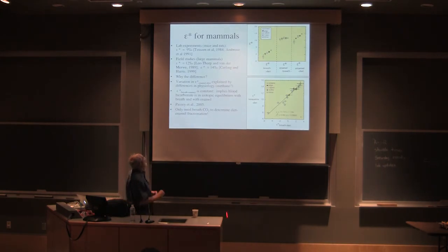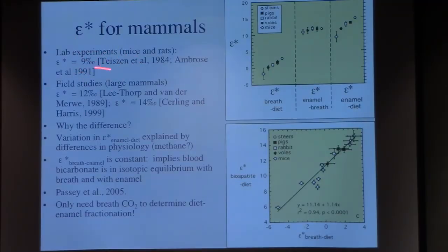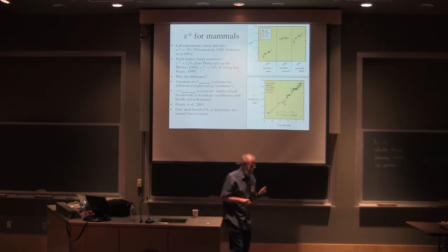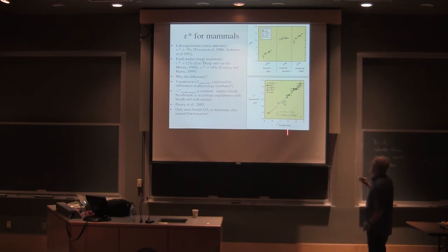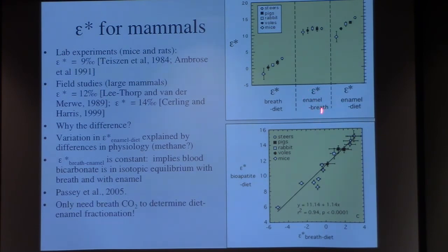Well, looking at this further, these are the lab experiments, sort of 9, 10 per mil, Larry Tieszen and Stan Ambrose. Field studies, Lee-Thorp had suggested perhaps 12 per mil. We ended up getting 14 per mil. So why this difference? Fortunately, we were able to do a bunch of studies with our BYU colleagues to actually collect animal breath. We could directly measure breath. We could, in many cases, actually measure tooth enamel from the same animals because they happened to die at the end of our experiment.